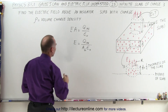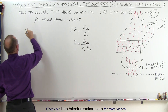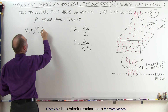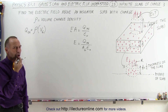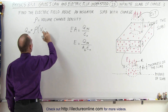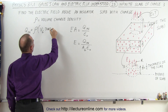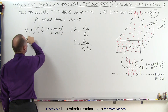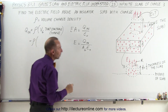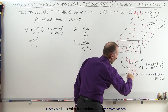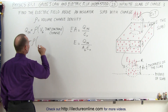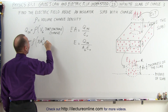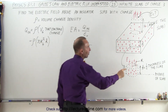For the charge inside Q inside, that's going to equal the volume charge density times the volume of the Gaussian surface that contains charge. We have to determine that volume: Q inside equals the density times the area pi r squared, multiplied by h, where h is equal to half the thickness of the slab.